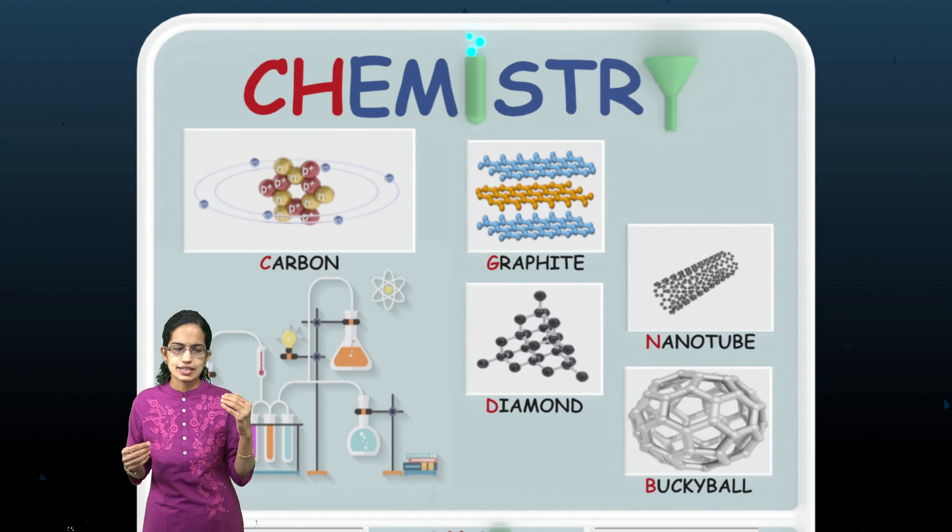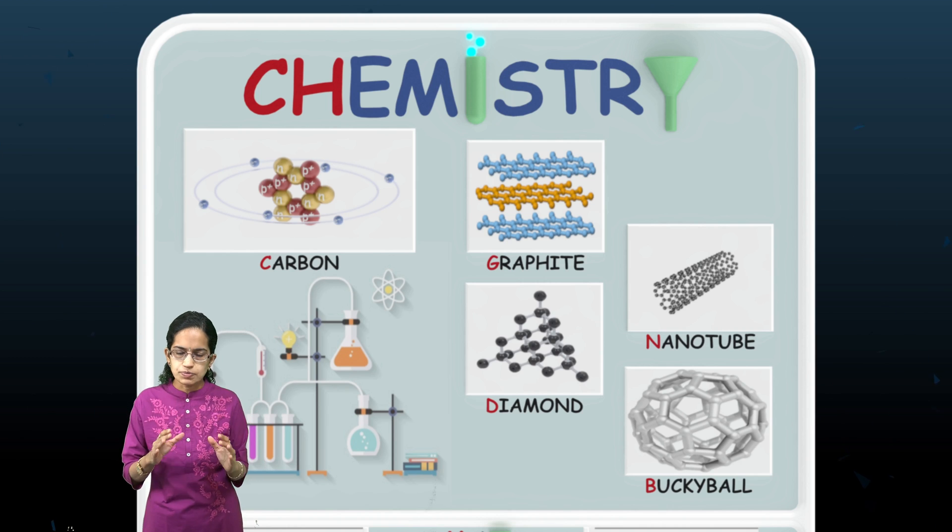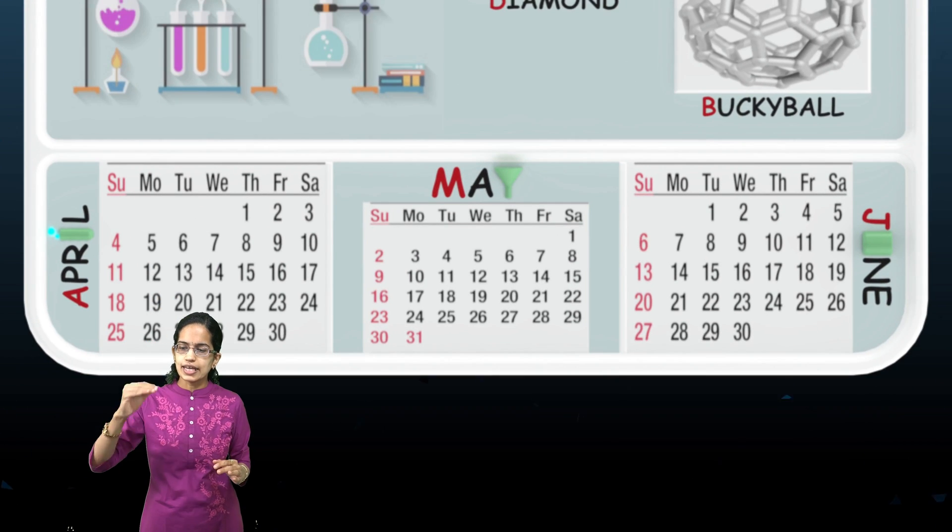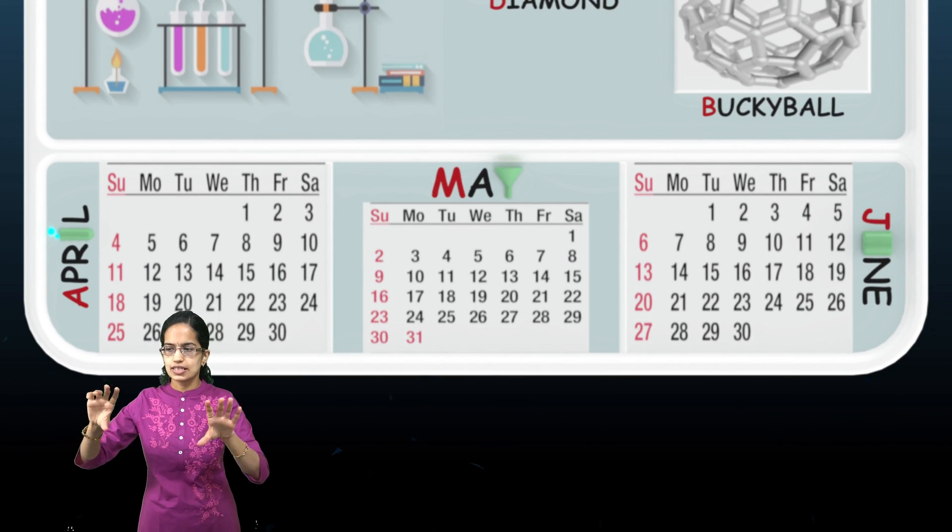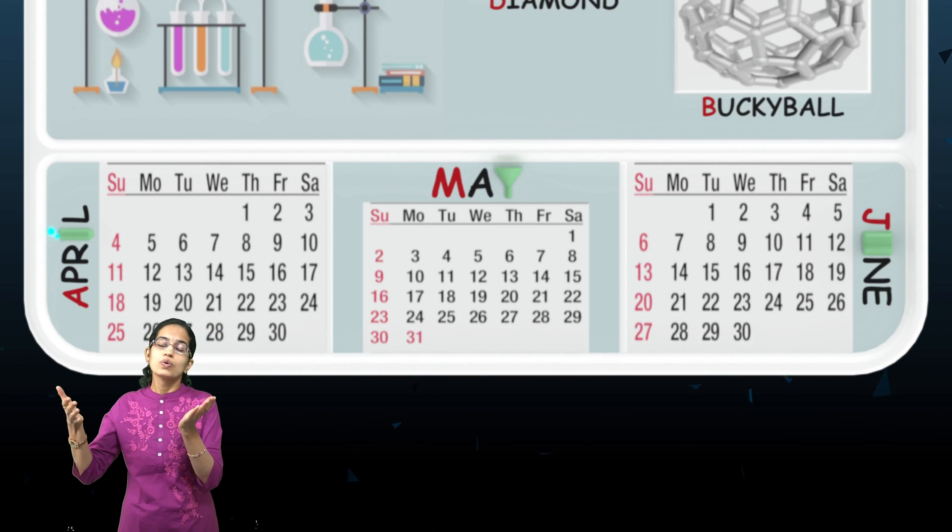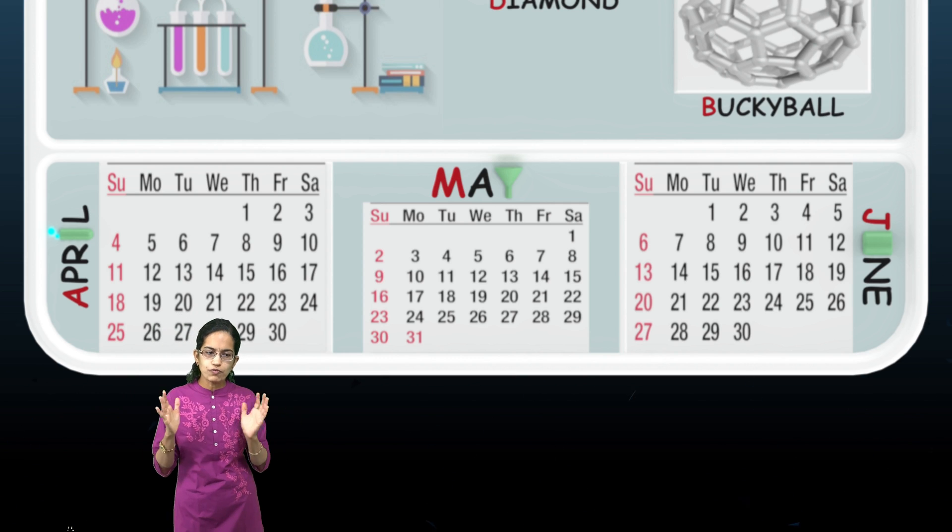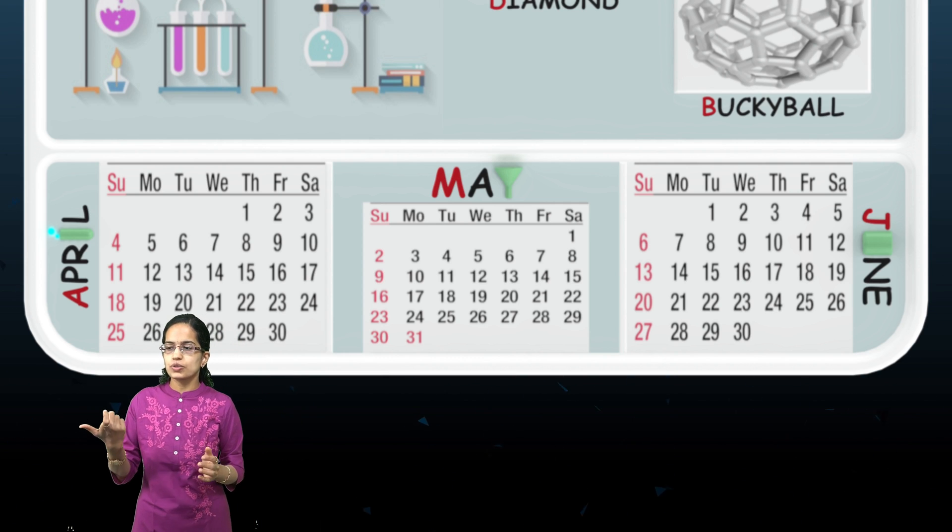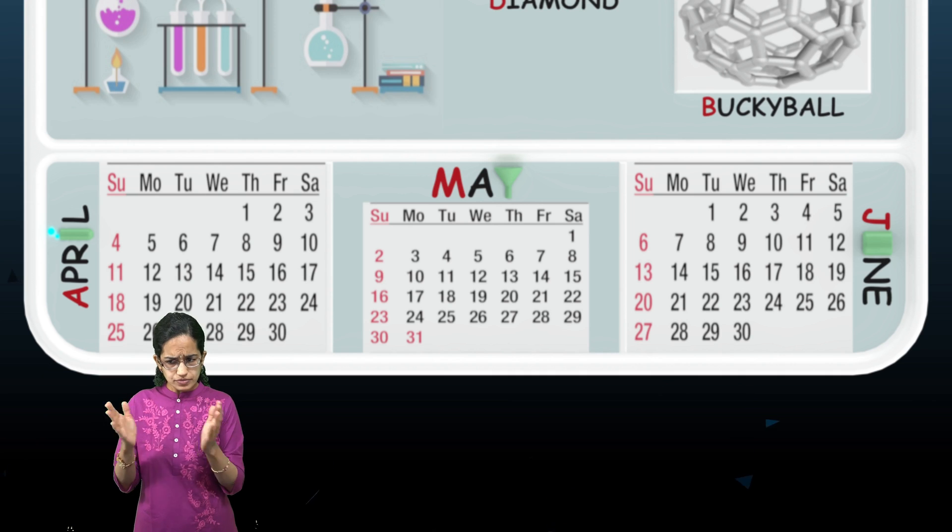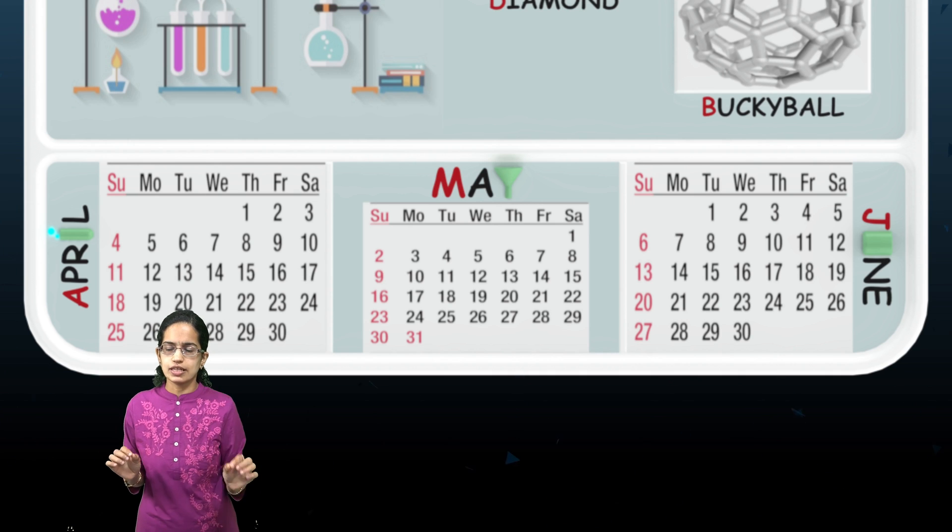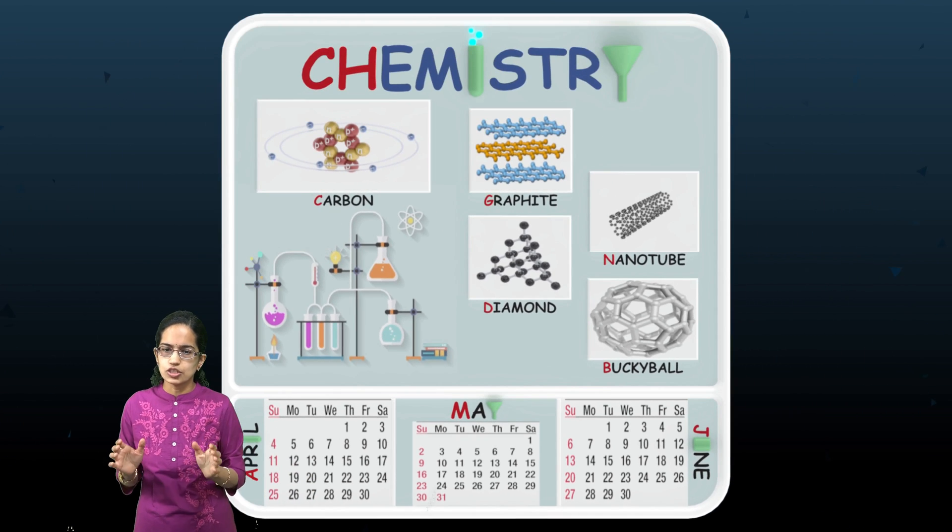You can write certain important points and categories for each to explain the concept further. Then, as we said, the calendar section again relates to chemistry. We are trying to relate April, May, and June to the aspects of chemistry, introducing a beaker and funnel in the words themselves.